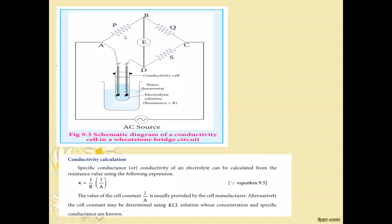In the Wheatstone bridge arrangement, there are four resistances: P, Q, R, and S. The ionic conductivity cell is connected into this bridge arrangement.